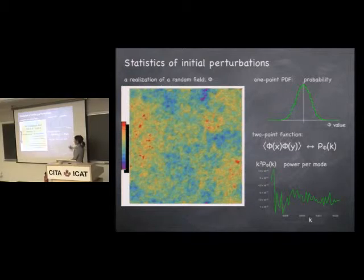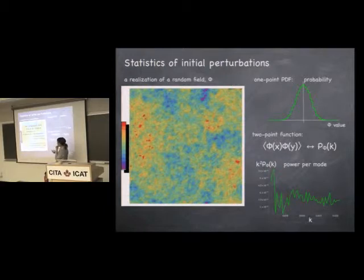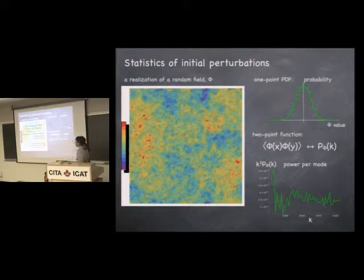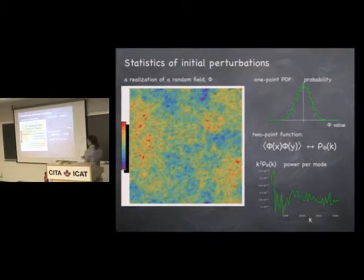Once I've measured the two-point function or the power spectrum, I've completely characterized the statistics. The three-point function and all odd-point functions vanish, and all even higher-point functions can just be written in terms of products of the two-point correlation function. So something that's a Gaussian field is a very special case — there is only this one piece of information to quantify it. Something that's non-Gaussian just means not this.